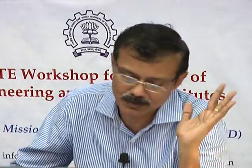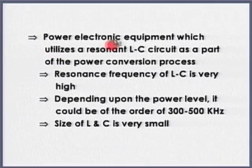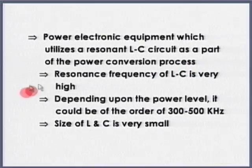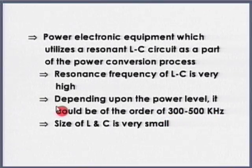I have to use a resonant circuit somehow. It is not going to be a steady current - current has to gradually rise and fall, there is an LC circuit. The moment I use LC, there is going to be resonance and that resonance frequency is very high. If the switching frequency is 500 kilohertz, the resonance frequency could be of that order as well. Since the resonant frequency is very high, the size of the LC is also very small - it could be of the order of 300 to 500 kilohertz.